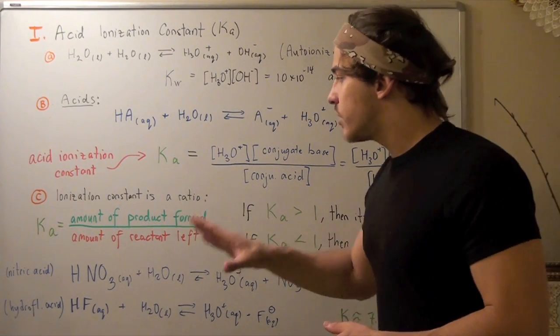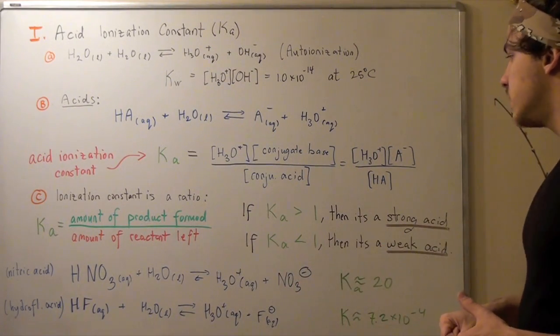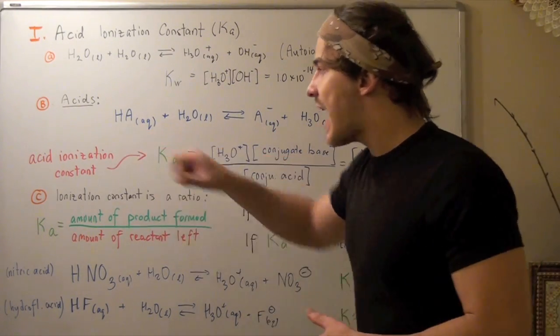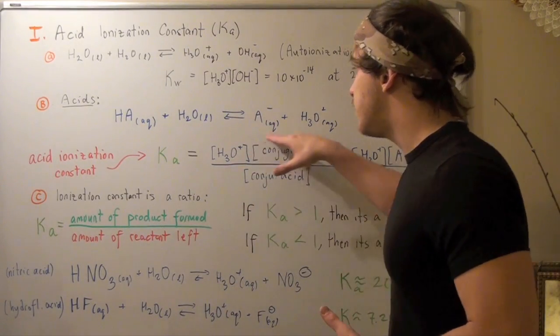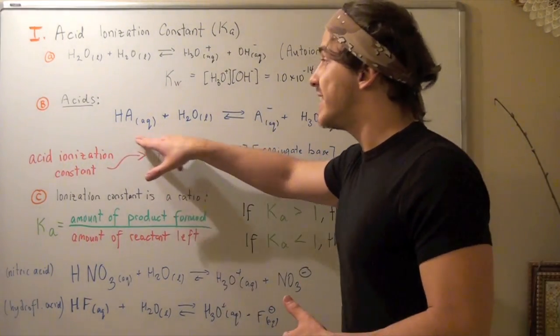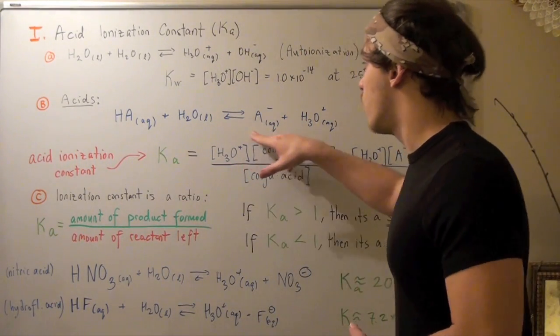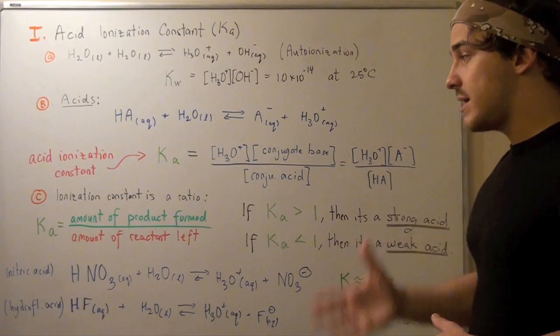Let's look at one more thing. If our Ka is less than 1, this must be a weak acid, but that means our conjugate base must be a good base. Likewise, if this was a good acid with Ka above 1, that means this was a bad conjugate base.